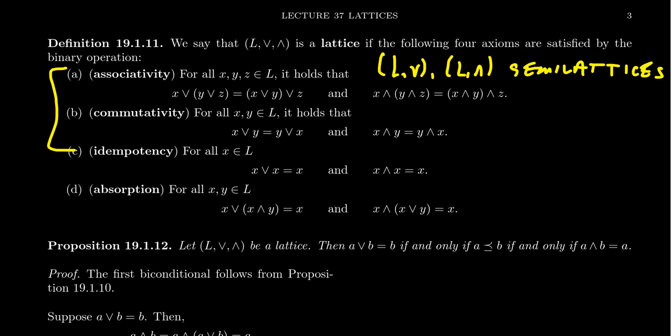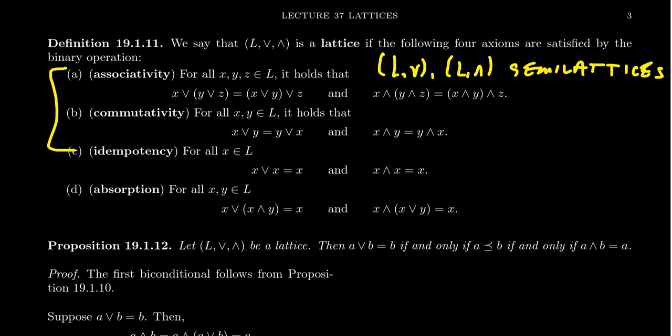Now if we just stop there, we have two semi-lattices. But why study them together rather than individually? Well, the point is that there must be some type of compatibility, some type of interaction between the two operations. With ring theory, we had the notion of distribution — that multiplication distributes over addition. With semi-lattices, we don't require distribution. We actually require something weaker, the so-called absorption axiom. I need at least one axiom that requires meet and join together, otherwise it's not really a lattice — it's just two semi-lattices. Two halves should make a whole.